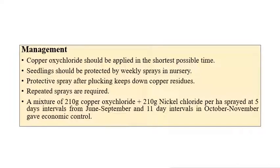For management of blister blight, application of copper oxychloride gives effective control. Seedlings should be protected by weekly spraying, especially in nurseries. We recommend copper oxychloride at 210 grams and nickel fluoride at 210 grams, sprayed at 10 to 15 day intervals between June–September and October–November.